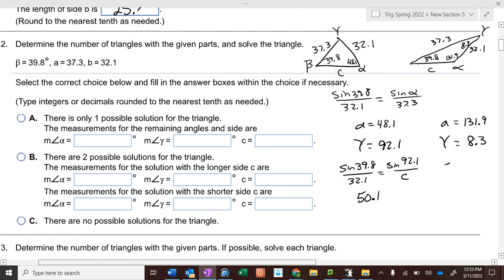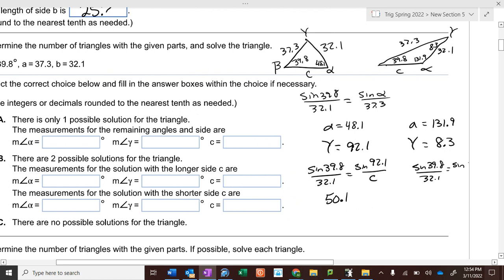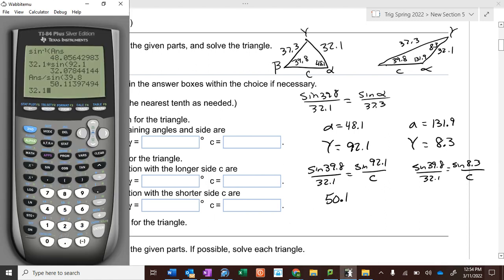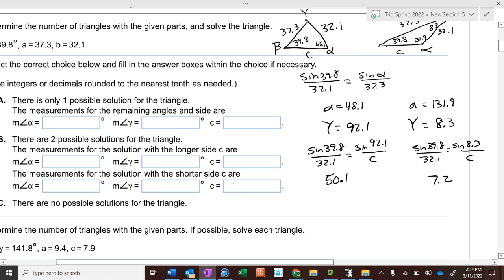And over here, the sine of 39.8 divided by 32.1 equals the sine of 8.3 over c, and that's 7.2. So the shorter side of c is 7.2, the longer side is 50.1. 50.1 goes with 92.1 and 48.1. 7.2 goes with 8.3 and 131.9. So it does take a little bit of a process to get those.